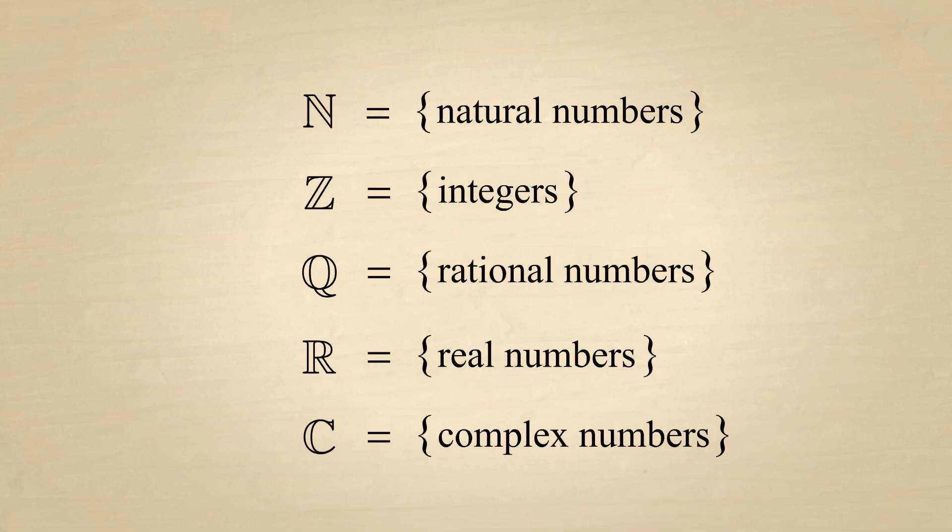We can indicate that an element is a member of a set by using the symbol for set membership. For instance, we can say that the element 1 is a member of the set of natural numbers. We can also indicate that an element is not a member by using the negation of this symbol. For example, we could state that 1 half is not a member of the set of natural numbers.